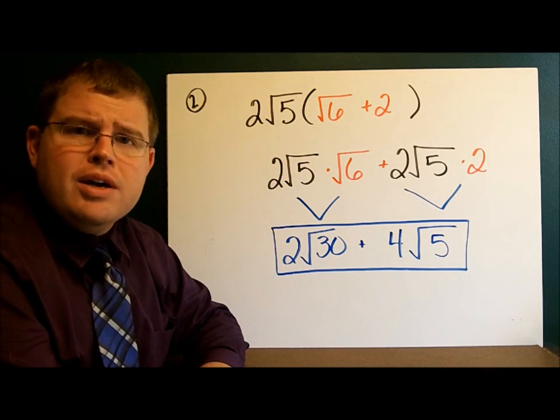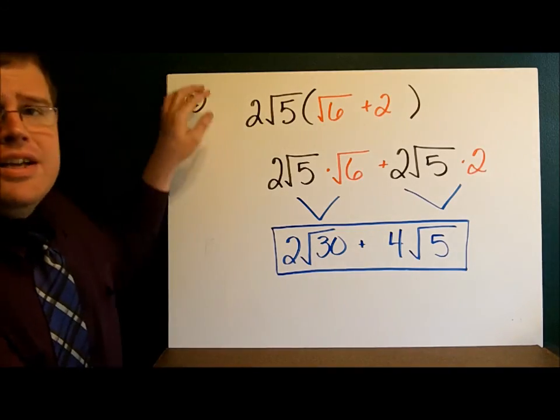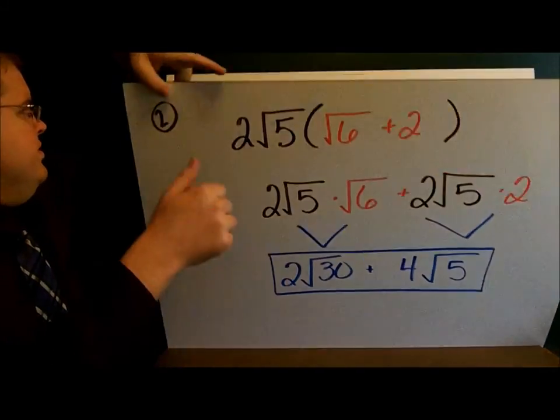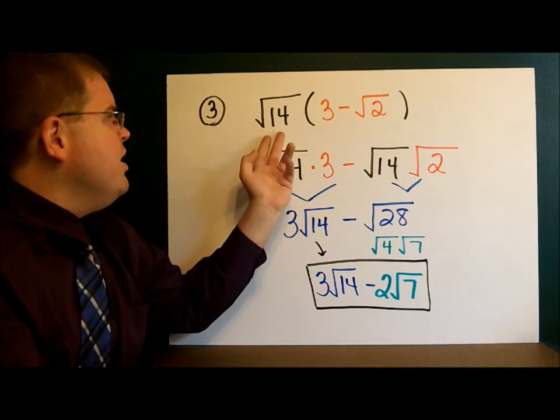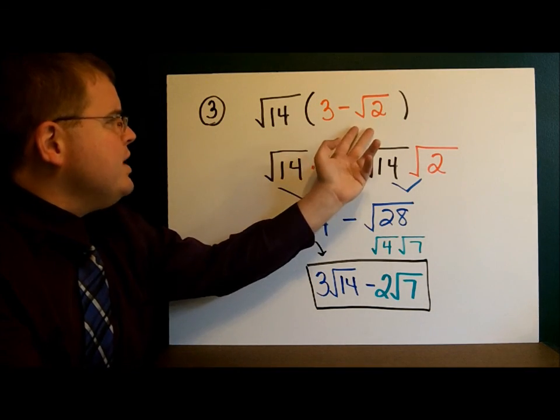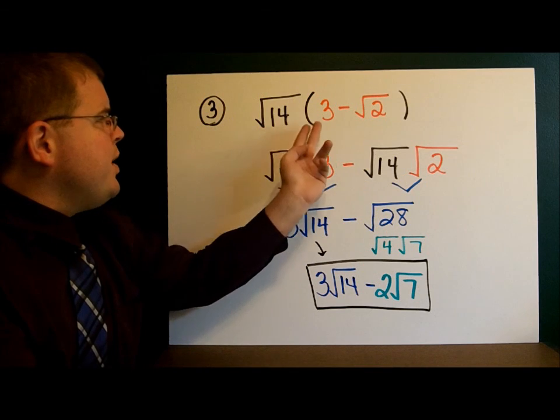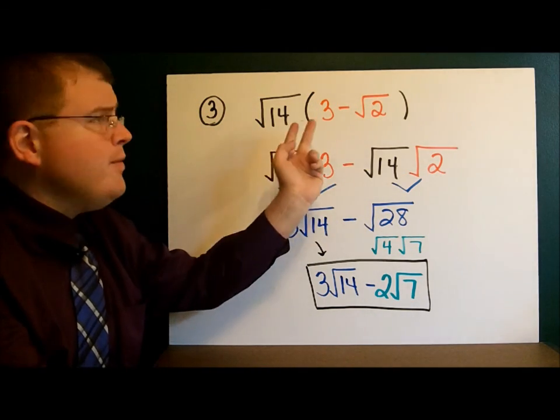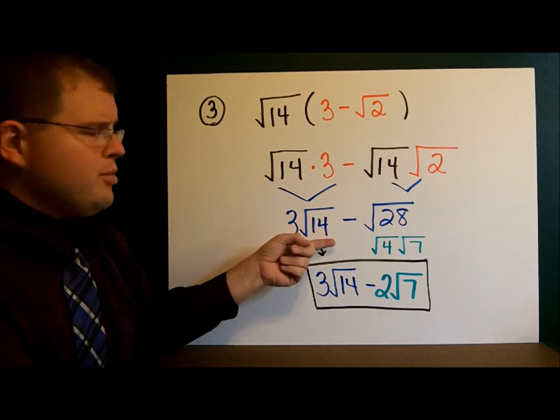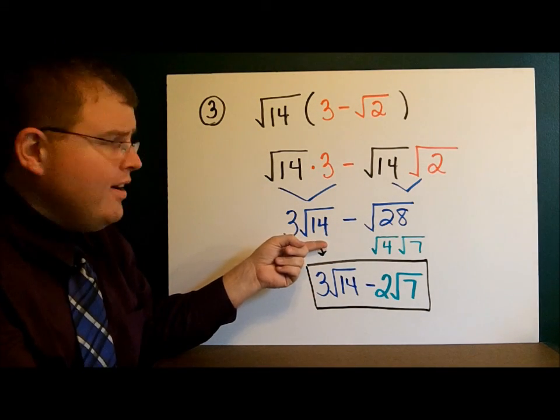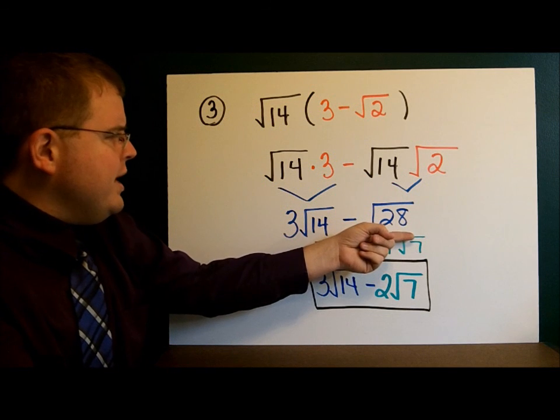Now, what if it's a little more complicated? Well, let's take a look at the next example. There's not a whole lot new going on here. We're distributing the square root of 14. And so, I have the square root of 14 times 3, the square root of 14 times the square root of 2. That gives me 3 square roots of 14 here. And the square root of 28 here.